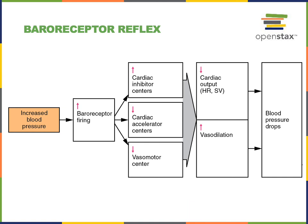At the same time, in response to increased blood pressure, the cardiac accelerator centers and vasomotor centers will have decreased activity, leading to decreased sympathetic nervous system activity. This also contributes to a decrease in cardiac output and an increase in vasodilation, which decreases the total peripheral resistance.